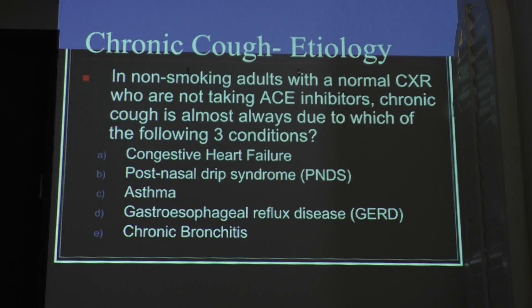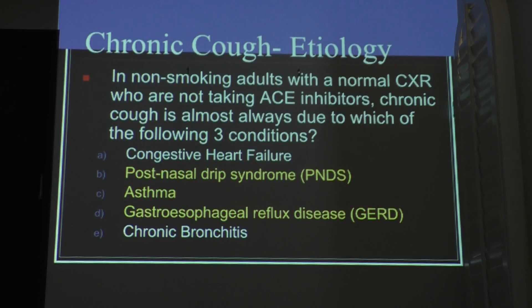If you have a patient coming to your office with chronic cough, the three conditions associated with it are asthma, GERD, and postnasal drip syndrome — which is actually one of the most common ones. We exclude chronic bronchitis and congestive heart failure. Fortunately, chronic bronchitis is not the number one cause, though it's certainly one of the reasons why people seek pulmonary doctors.